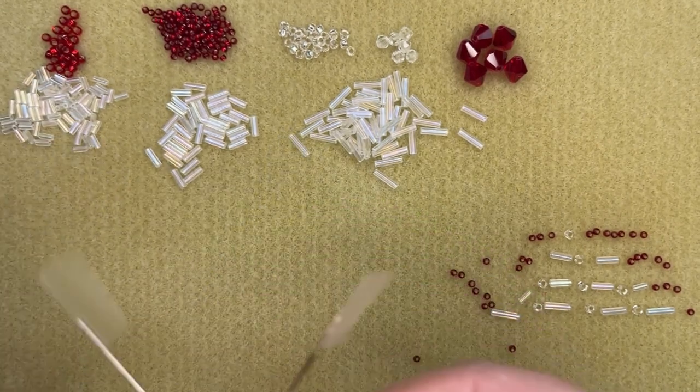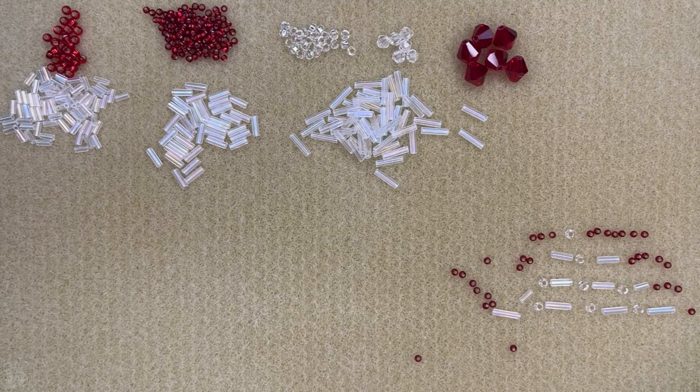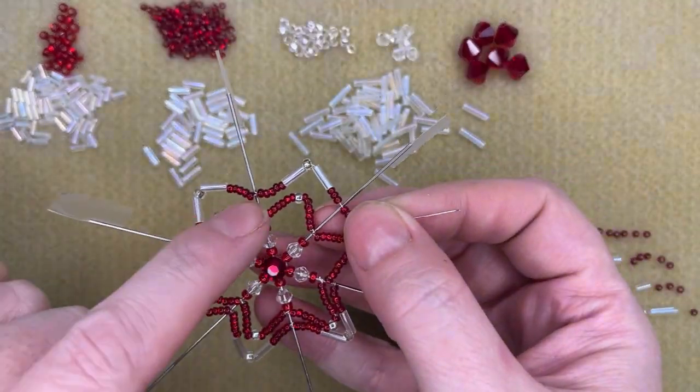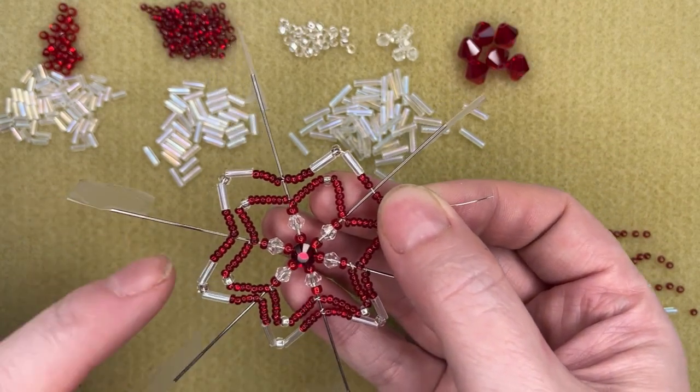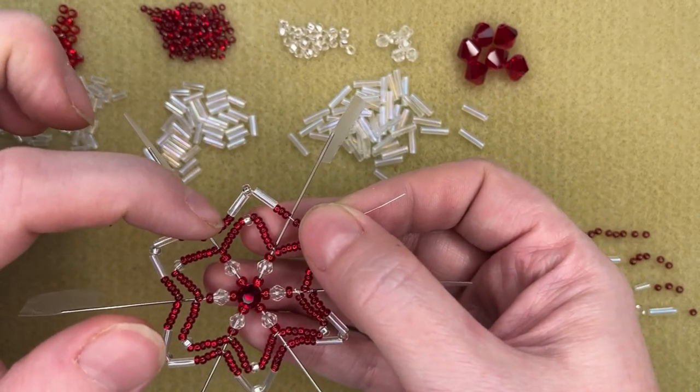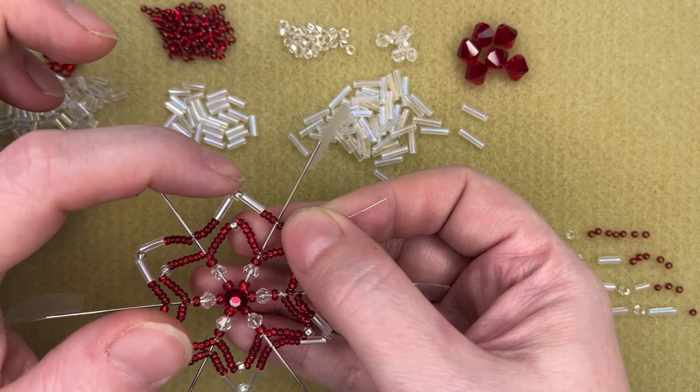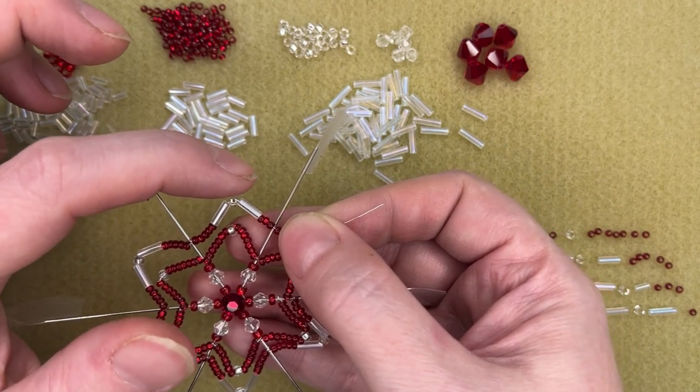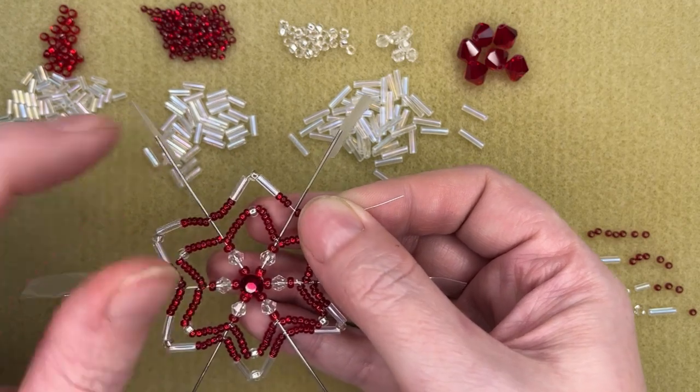So I've got one that's a little further along. So I've done the seven and one and seven all the way around, and then I started into my second row, which is five of the seed beads, size 10 seed beads, one size 3 bugle, this is the size 8 silver line crystal, size 3 bugle, and then five more seed beads.